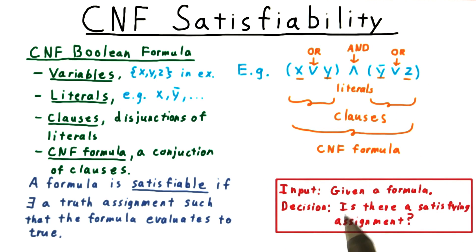The CNF satisfiability problem is, given a CNF formula, determine if that formula has a satisfying assignment. Clearly, this problem is in NP, since given any truth assignment, it takes time polynomial in the number of literals to evaluate the formula.